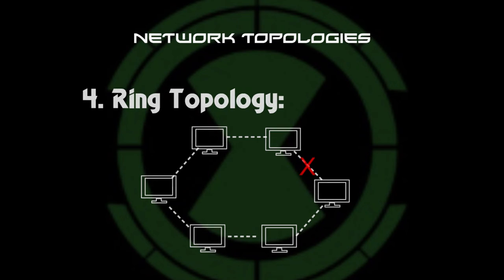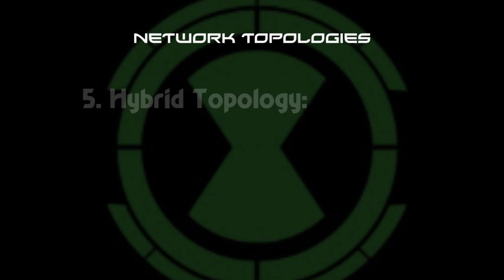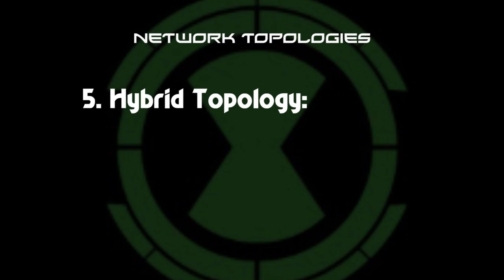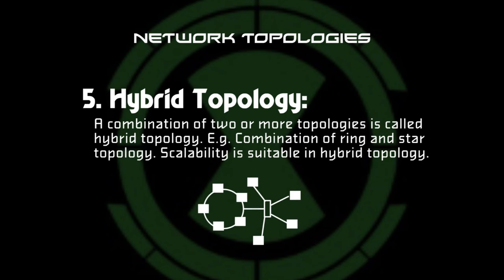And finally, the hybrid topology. A combination of two or more topologies is known as hybrid topology. For example, by making any combination of topologies, like ring and star topology. It is scalable, as we can further connect other computer networks with the existing networks using different topologies.